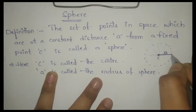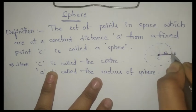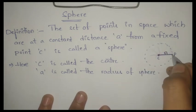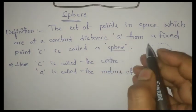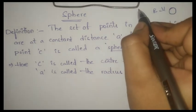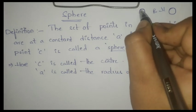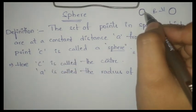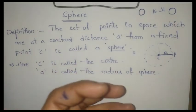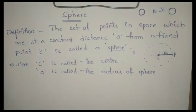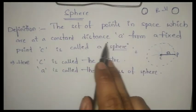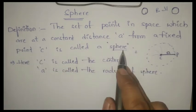This distance is 'a'. For example, points P, Q, and others which are at a constant distance 'a' from a fixed point C — we call it a sphere. Examples of a sphere include a ball and the earth. There is a difference between a circle and a sphere: a circle is simply flat, like a bangle. A sphere, like a ball or the earth, has volume.